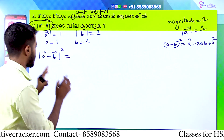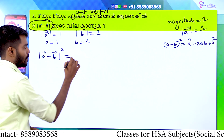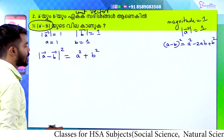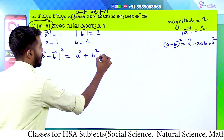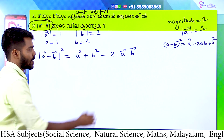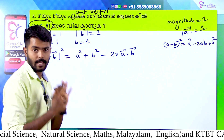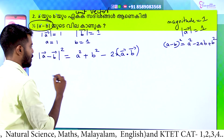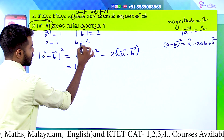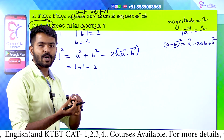We expand modulus of vector A minus vector B the whole square. That gives A square minus 2AB plus B square. That is vector A whole square plus vector B whole square minus 2 into vector A dot vector B. We need to find the value of the modulus of vector A minus vector B.